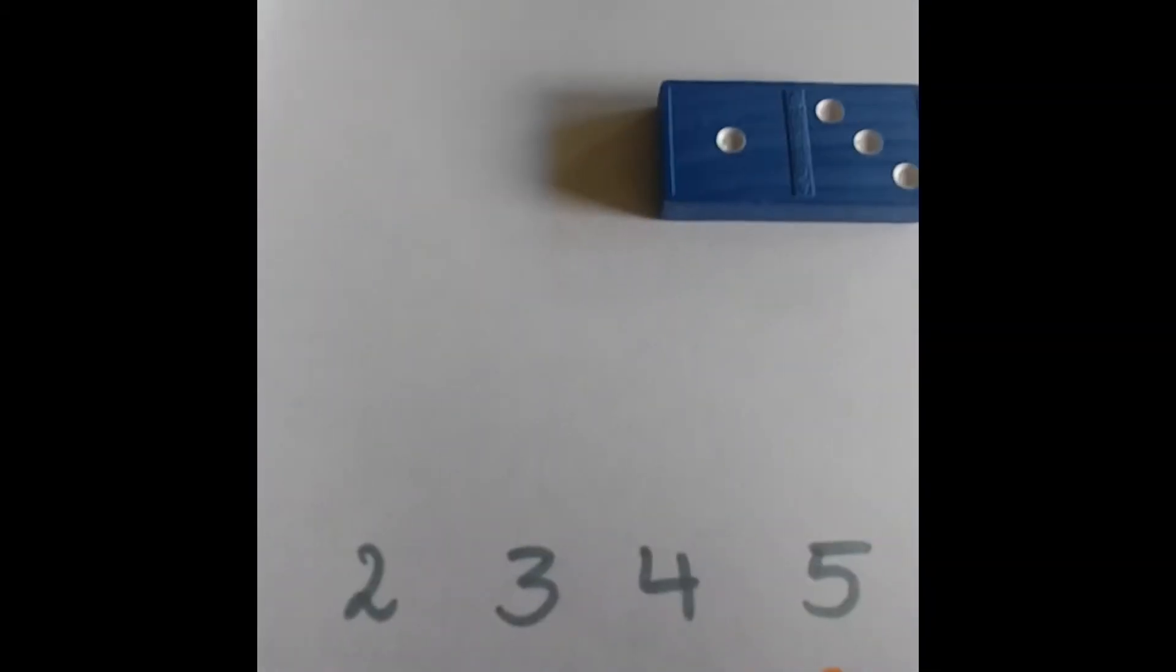So what you do now, you pick one domino piece and you count. You have one, two, three dots in one square, one in another. All together, that makes one, two, three, four. Look at your color chart. Four is green.